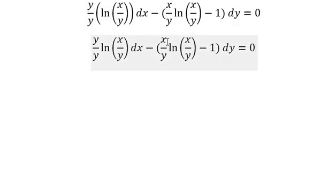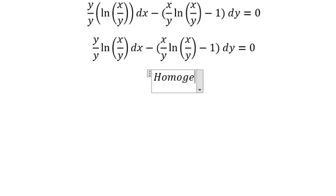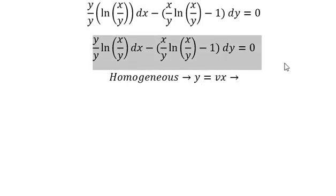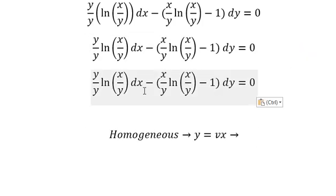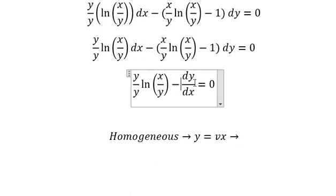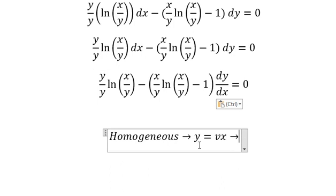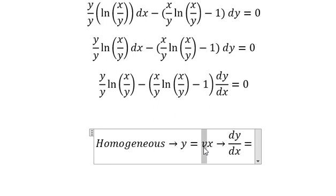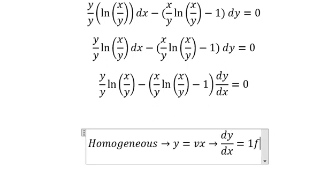Now we have x over y, x over y. This is about homogeneous because they have the same degree in here. So I will put y equals to vx. Later we need to do the first derivative for both sides, so in this one I will divide both sides by dx. So this one we have dy over dx.